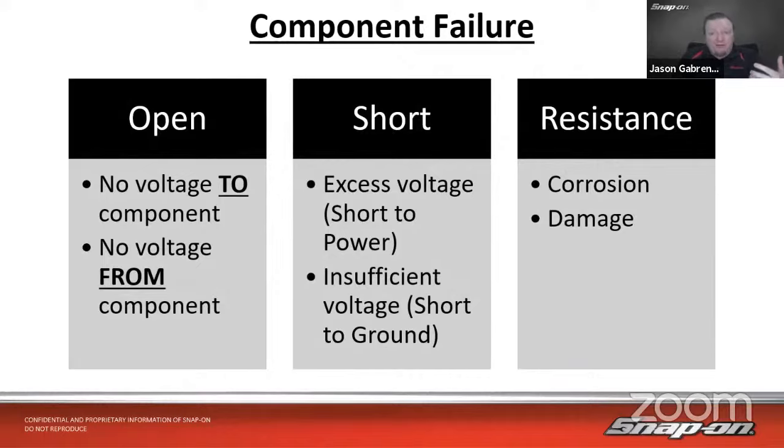How about a short? So a short could be excessive voltage if I have a short to power. Say I'm only supposed to be five volts and it's rubbing against another wire in the harness and it's a 12 volt wire. So now I'm getting 12 volts in that five volt circuit. Or it could have insufficient voltage if I have a short to ground, maybe it's chafing on a piece of metal.